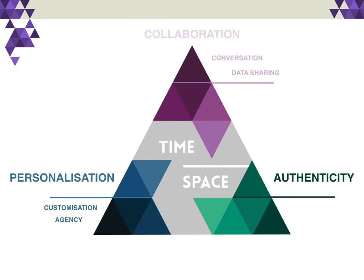In the case of the authenticity construct, we identified three sub-constructs: the task, the tool, and the setting. The task and the tool are related to how learners can use their mobile devices to undertake activities that are more authentic and realistic, using apps that are more professional. The setting relates to the extent to which learning can be situated in contexts that are more professional and more realistic, including contexts that allow the learner to move beyond formal bounded spaces, such as field trips and visits to museums.